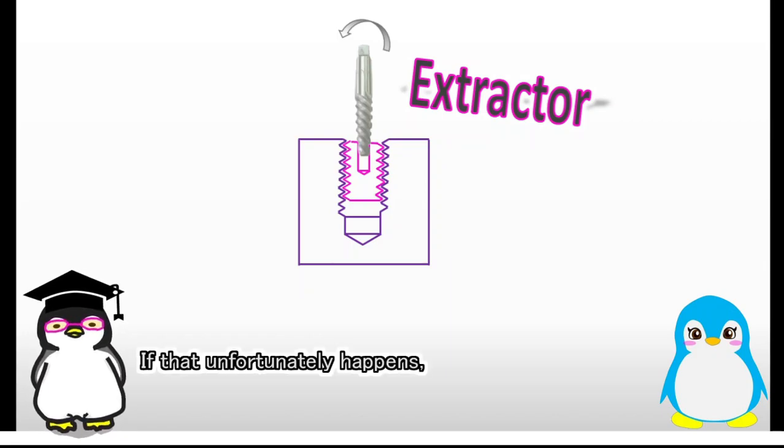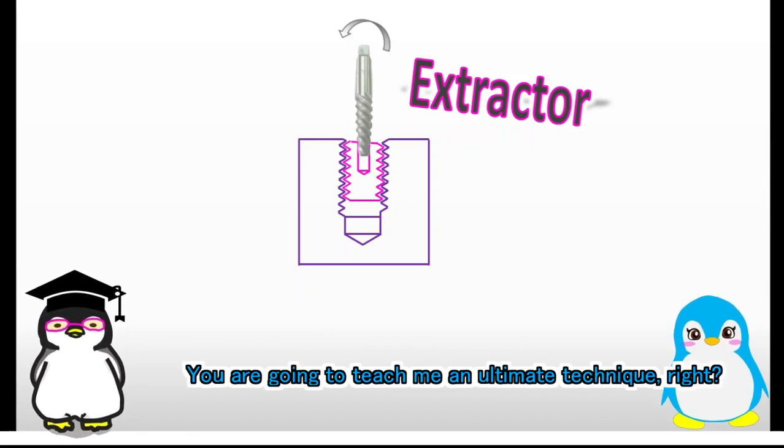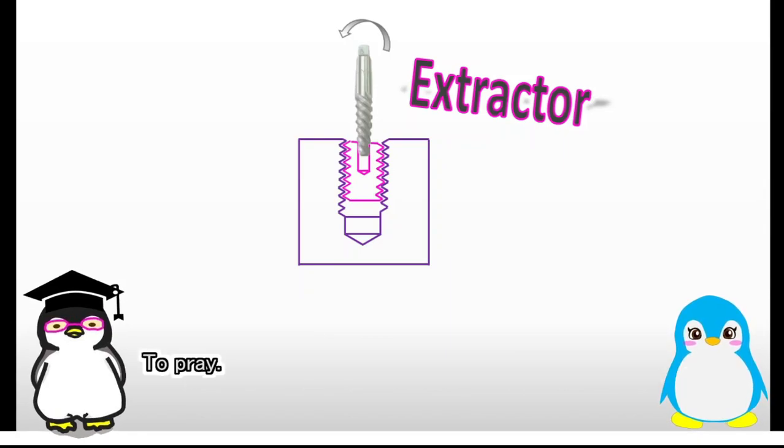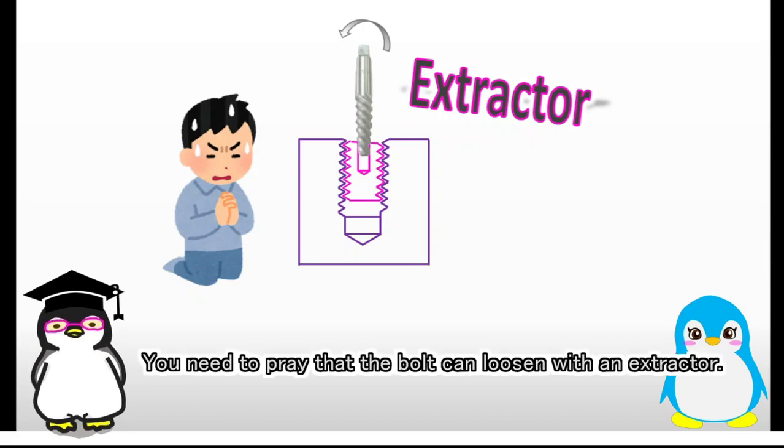Why? The way sometimes cannot remove a broken bolt. If that unfortunately happens, you'll have a hard time to remove it. That's why the first thing you have to do when you see a broken bolt is... You are going to teach me an ultimate technique, right? To pray. You need to pray that the bolt can loosen with an extractor.